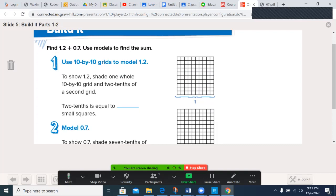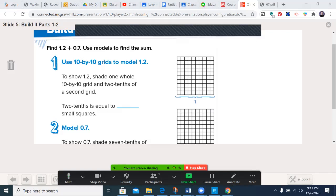We have 1.2 plus 0.7. In these cases, a whole square represents one, one column represents a tenth, and one box a hundredth. Let's go ahead and we're going to color that in.